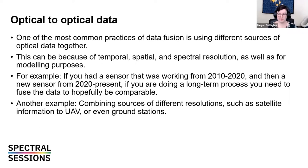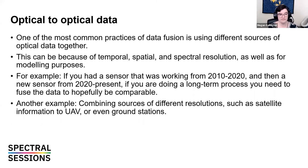One of the most common practices of data fusion is to use different sources of optical data together, because of temporal, spatial, and spectral resolution differences, as well as for modeling purposes. For example, if you have a sensor that was working from 2010 to 2020 and then need a new sensor from 2020 to present — for a long-term process monitoring change over 50 years — you need to fuse data and hope it's comparable from one time period to the next. Another example is combining sources of different resolutions, such as satellite data, a UAV collect, or even ground stations.